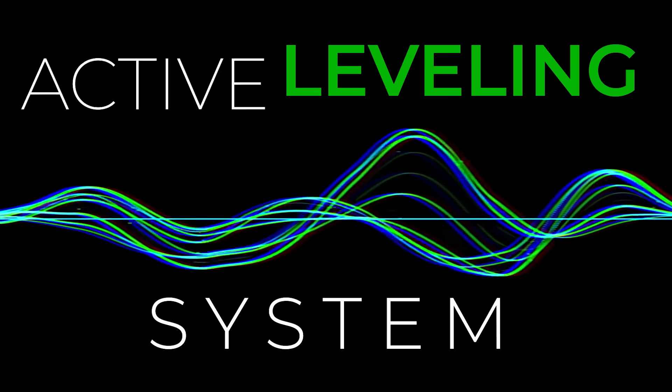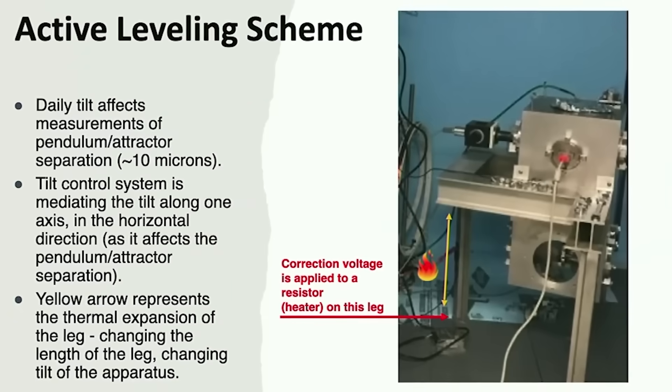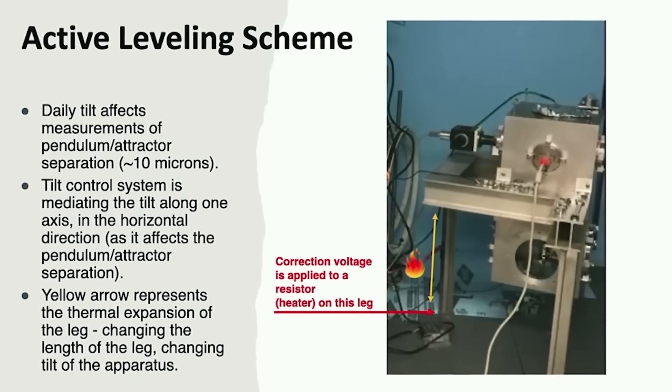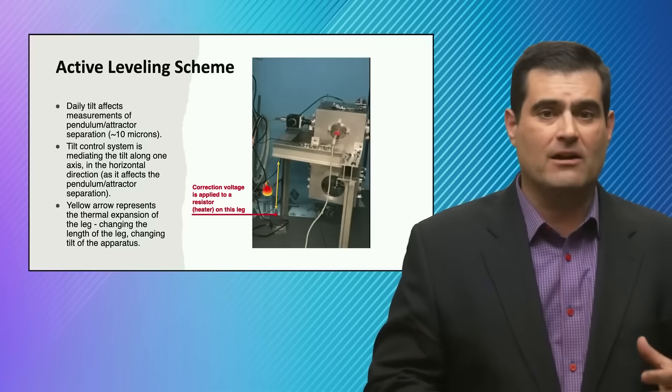and what's called an active leveling system. That is the key enabling device at some level. The tilts in the apparatus can affect the measurement at the micron level, and that's very important for ruling out so-called systematic errors.